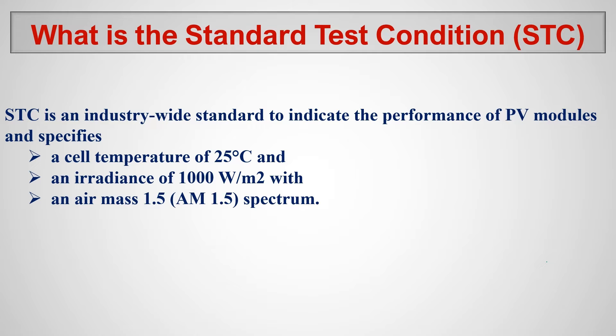So let's look at what are their conditions. They have three conditions: the cell temperature should be at 25 degrees Celsius, and the solar radiation should be 1000 watts per meter square, and air mass should be 1.5 AM 1.5 spectrum.